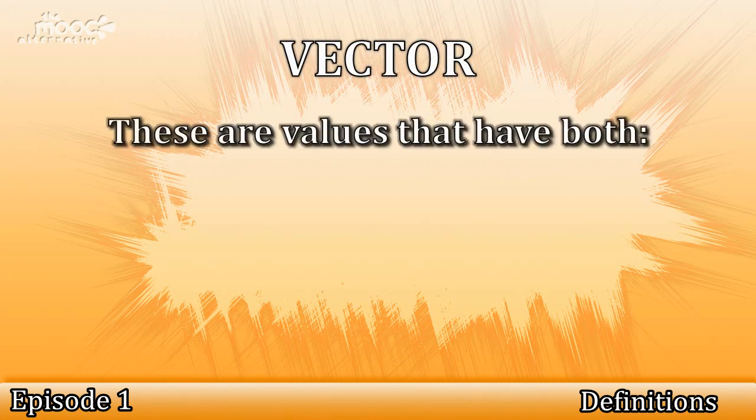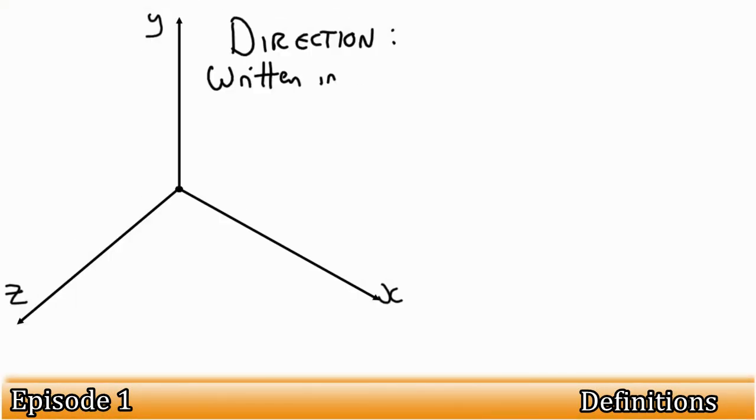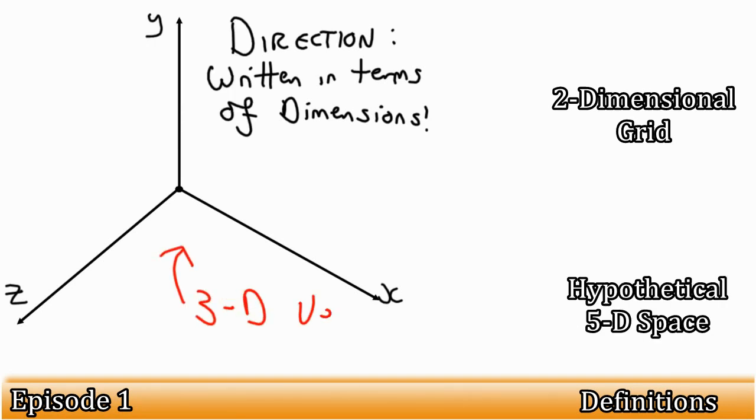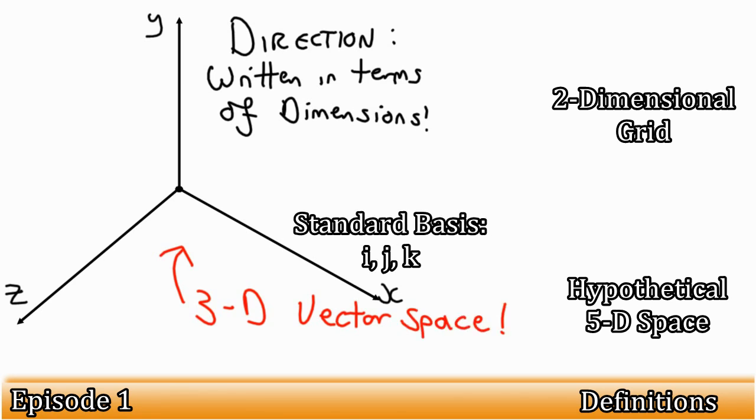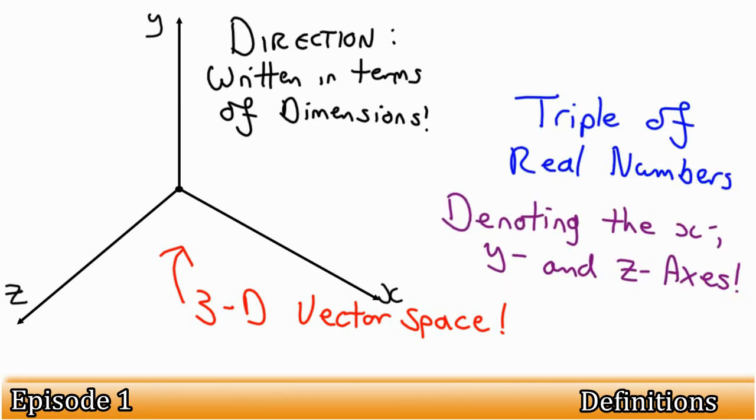Vector. These are values that have both a magnitude and a direction. A direction can be denoted in terms of dimensions, whether it be on a two-dimensional grid or in theoretical 5D space. For this course, we will only consider a 3D vector space, with the standard basis of i, j and k. This means that vectors will be represented as a triple of real numbers, referring to the x, y and z axes.